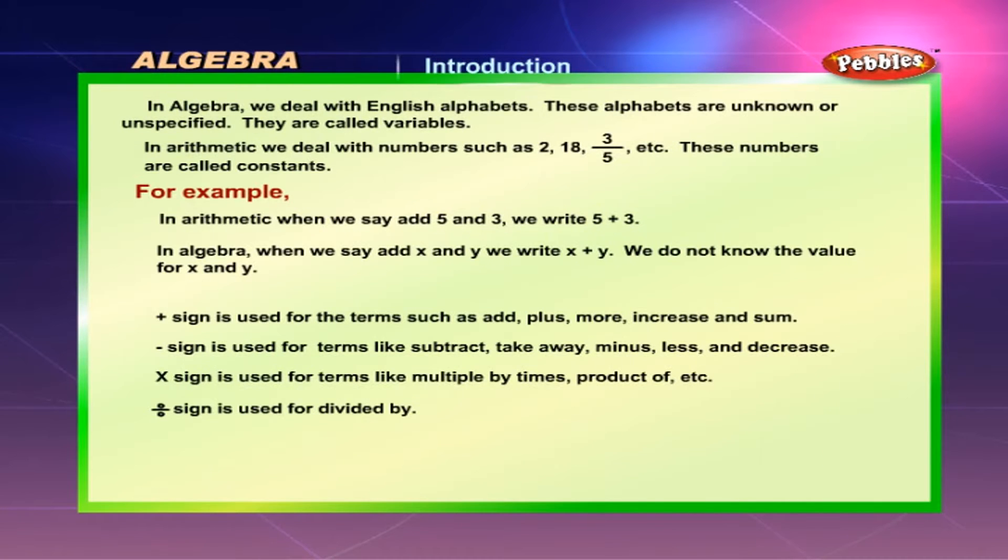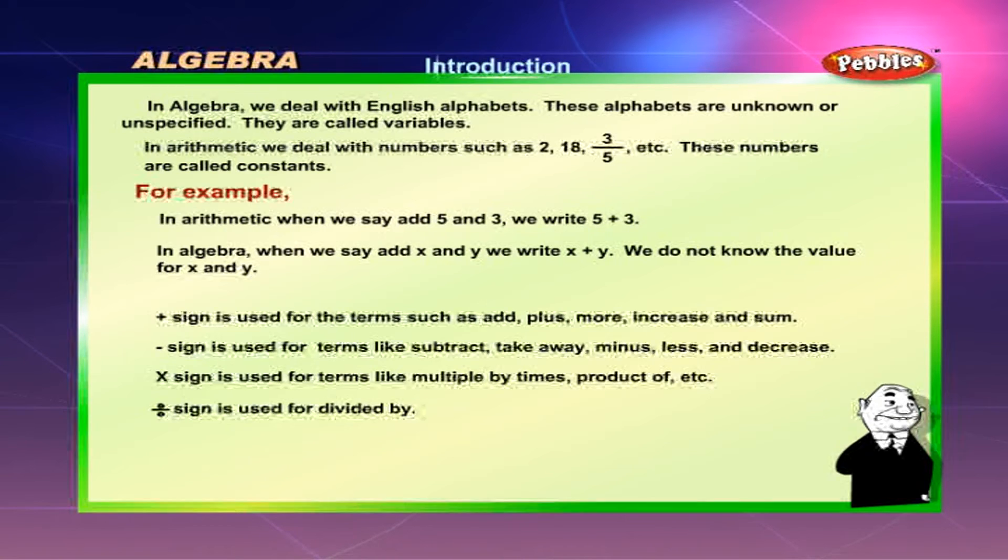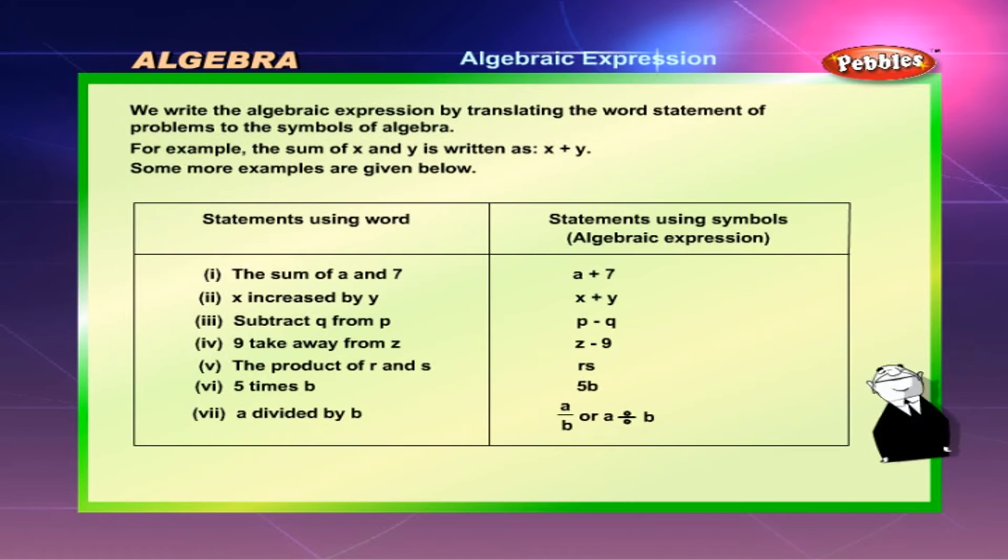The + sign is used for terms such as add, plus, more, increase, and sum. The - sign is used for terms like subtract, take away, minus, less, and decrease. The × sign is used for terms like multiple by, times, product of, etc. The ÷ sign is used for divided by.